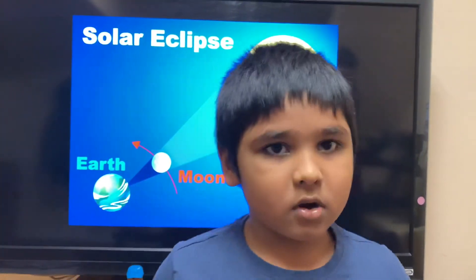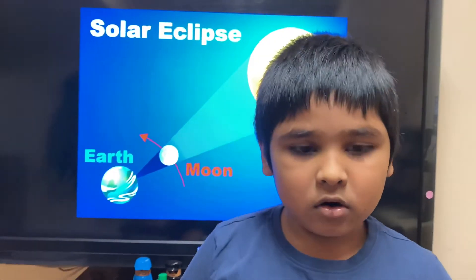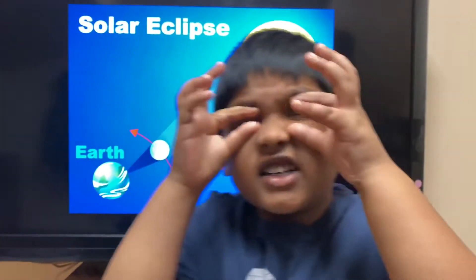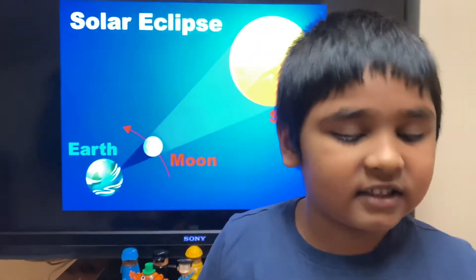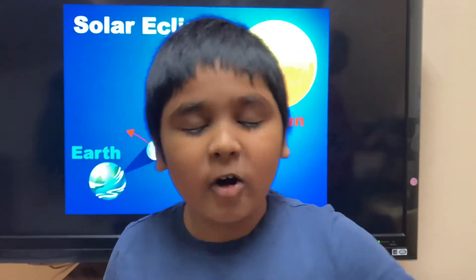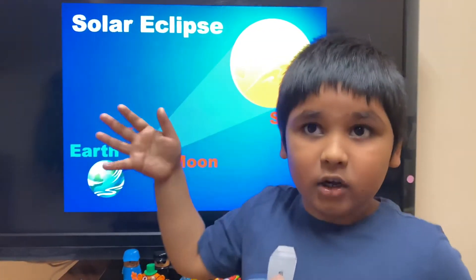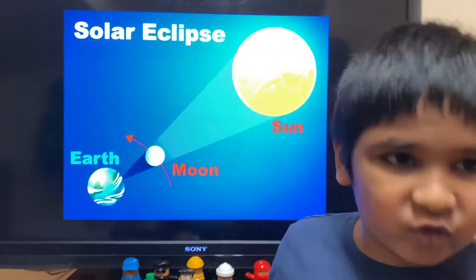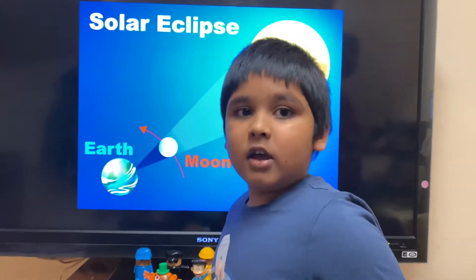We can't just stare at it, or else it'll hurt our eyes, because during that time there are powerful UV rays that could hurt our eyes a lot. So that's why we need to have sunglasses when a solar eclipse occurs. It's kind of cool and scary too.